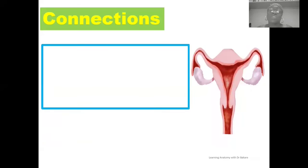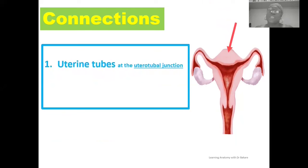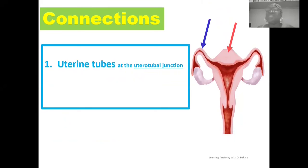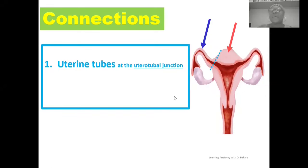Let's look at the connections the uterus creates with surrounding structures. There are tubular extensions from the lateral wall of the uterus as uterine tubes — fertilization occurs in the uterine tube, and the fertilized egg is then implanted into the uterine wall. The uterine tube is highlighted in blue, and the connection between the uterus and uterine tube is at the uterotubal junction. There is thus continuity between the lumen of the uterine tube and the cavity of the uterus.